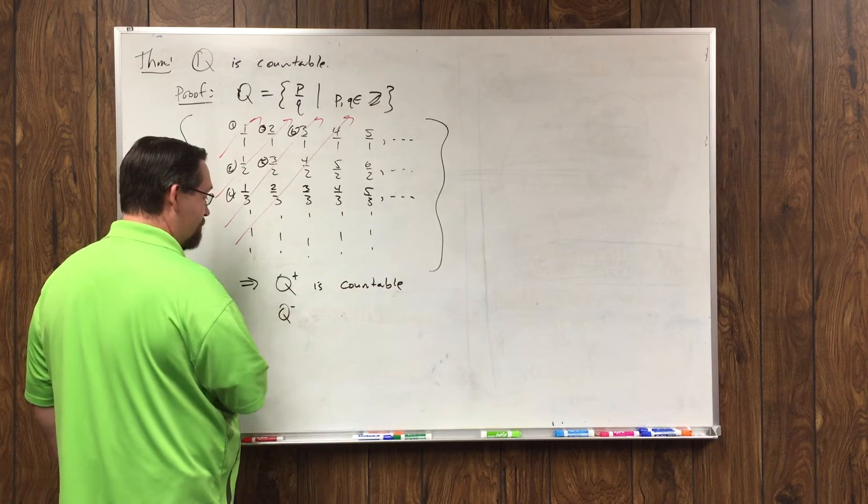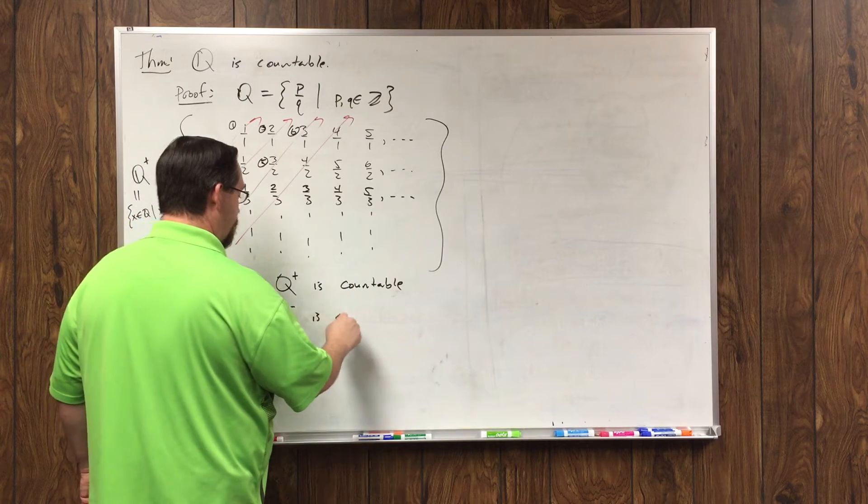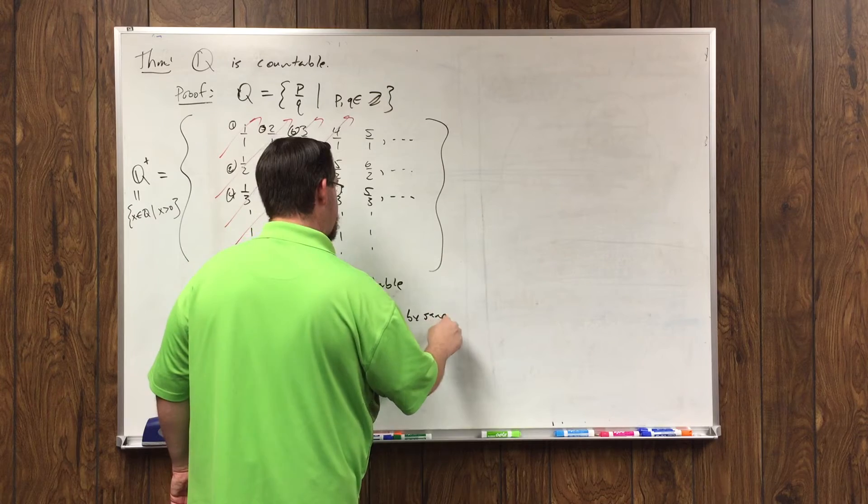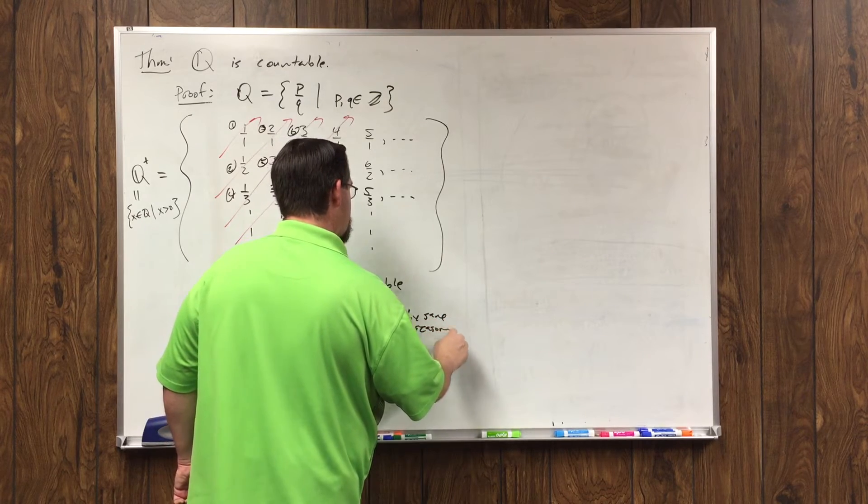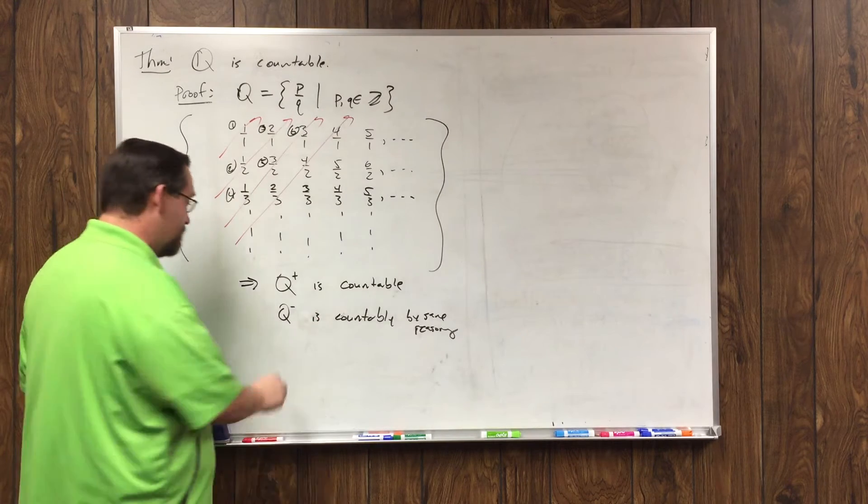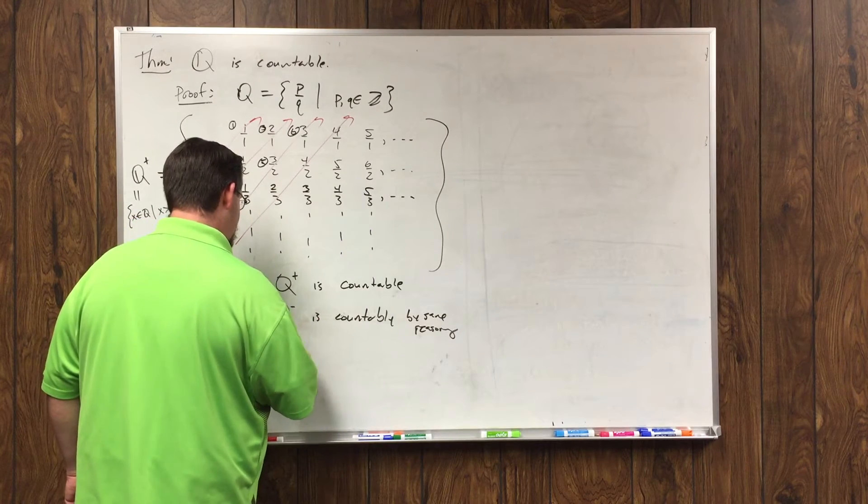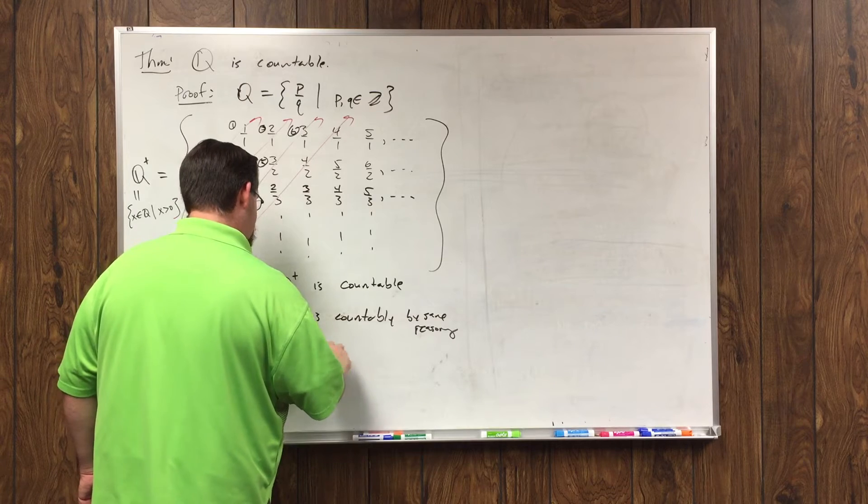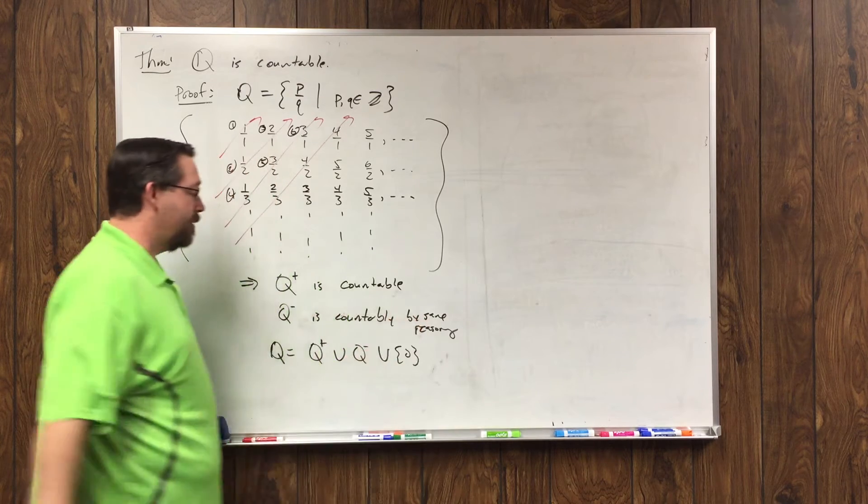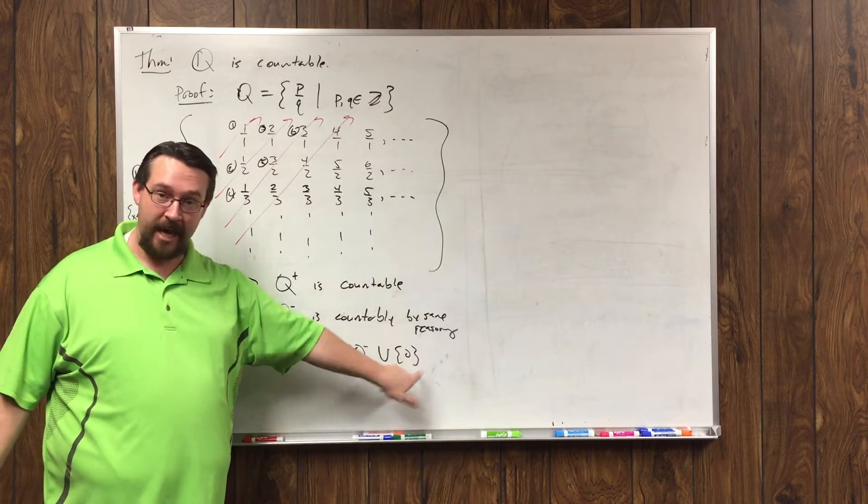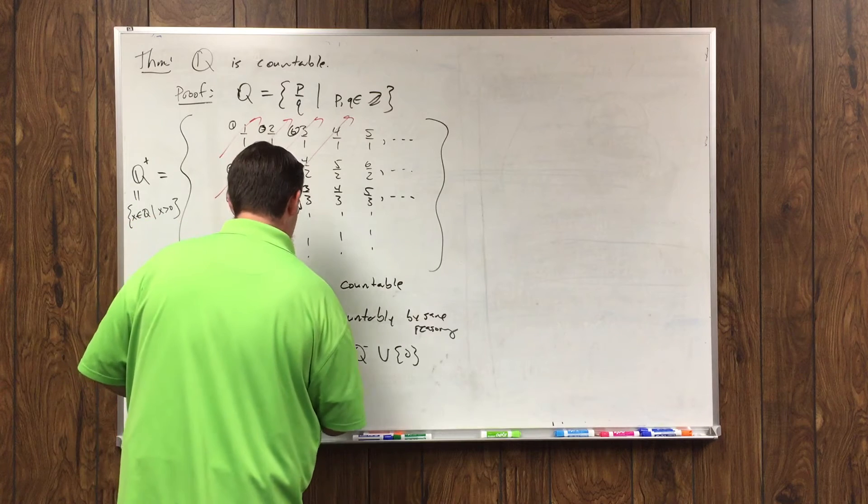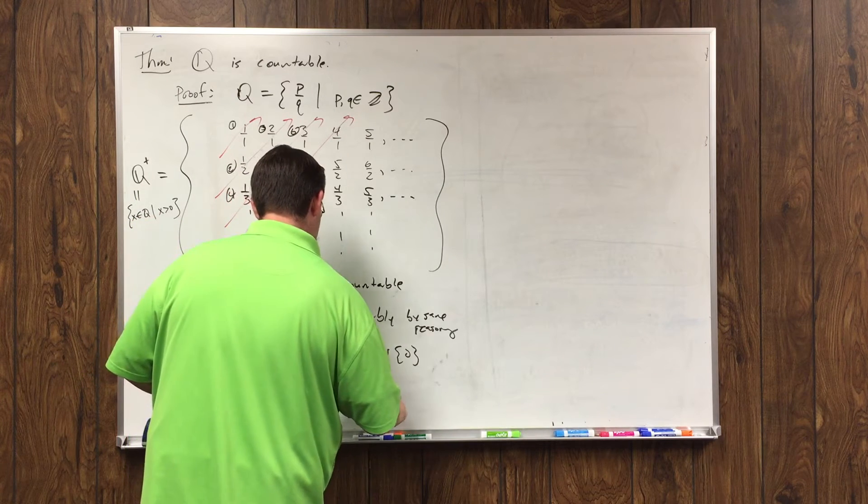Similarly, Q- is countable by the same reasoning. Just put minus in front of everything, you've got Q-. And so Q is Q+ union Q- union that. Countable, countable, countable. Q is countable.